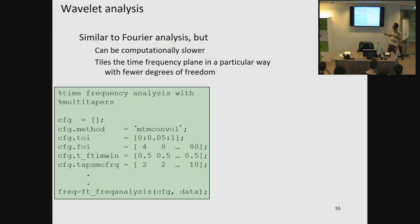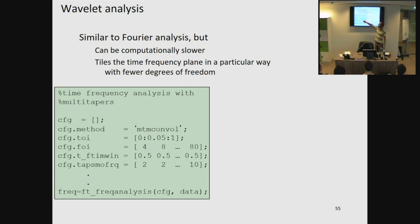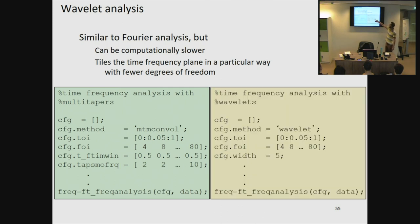To implement either wavelet analysis or Fourier analysis in Fieldtrip: for time-frequency analysis using Fourier and multi-tapers, we specify the method mtmconvol, the time and frequency of interest, the length of our time window, and the amount of smoothing. For wavelet analysis, we specify the method wavelet, again time and frequency of interest, and then we can only specify the width of our wavelet, which is the same for all frequencies.